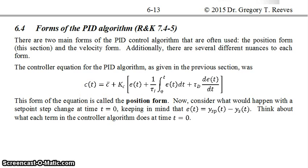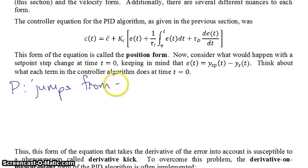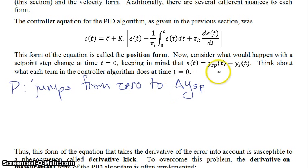In this position form, consider what would happen if you had a setpoint step change at time t equals 0. Keep in mind that the error is by definition equal to the setpoint minus the sensor value. The proportional term would jump from 0 to the change in your setpoint, delta y_setpoint, because you change your setpoint at time t equals 0, so the error is no longer 0 but jumps up initially.